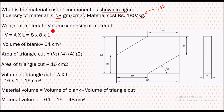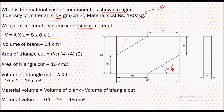The weight of this material will be equal to volume into density of material. To get this volume, we have to take the total volume of the blank, which is 80 by 80 by 10 mm depth, and then subtract the two triangular pieces from it to get the required volume.